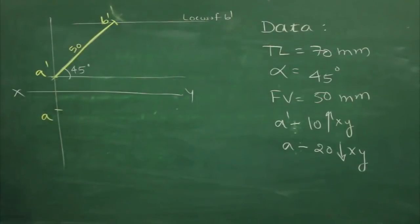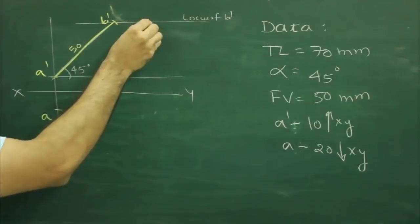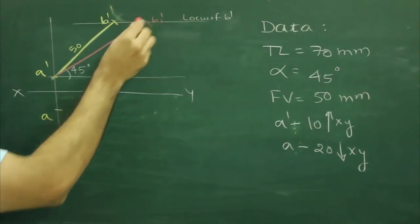After that we have true length as well, so from A dash we can cut true length. That would be B1 dash.